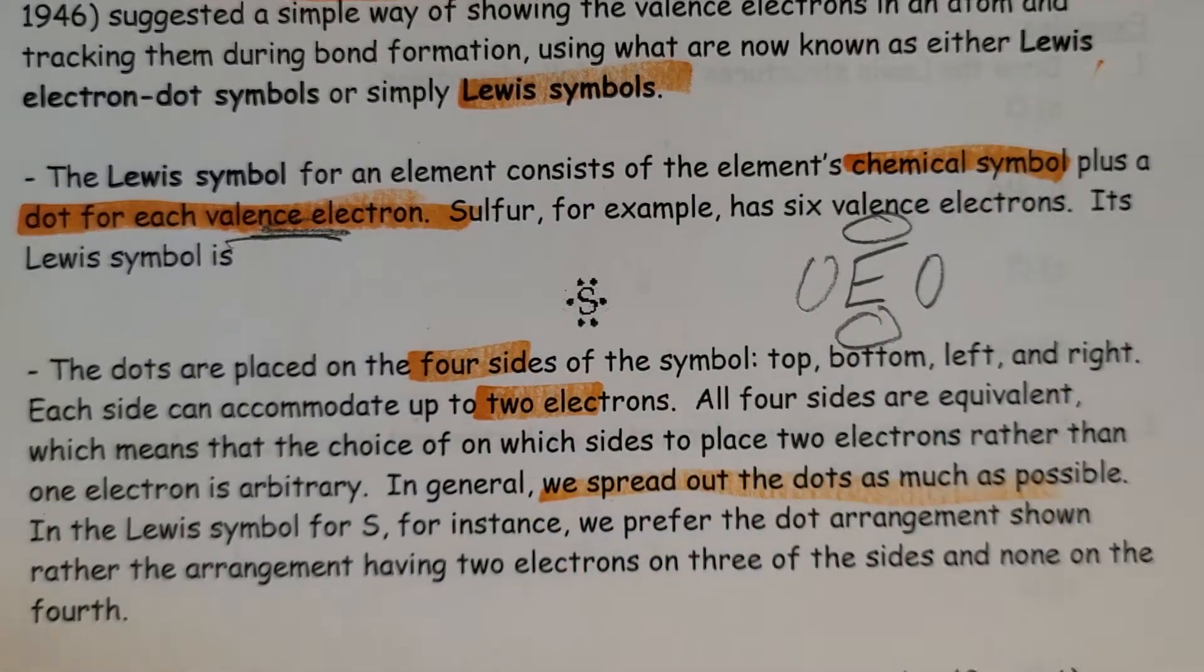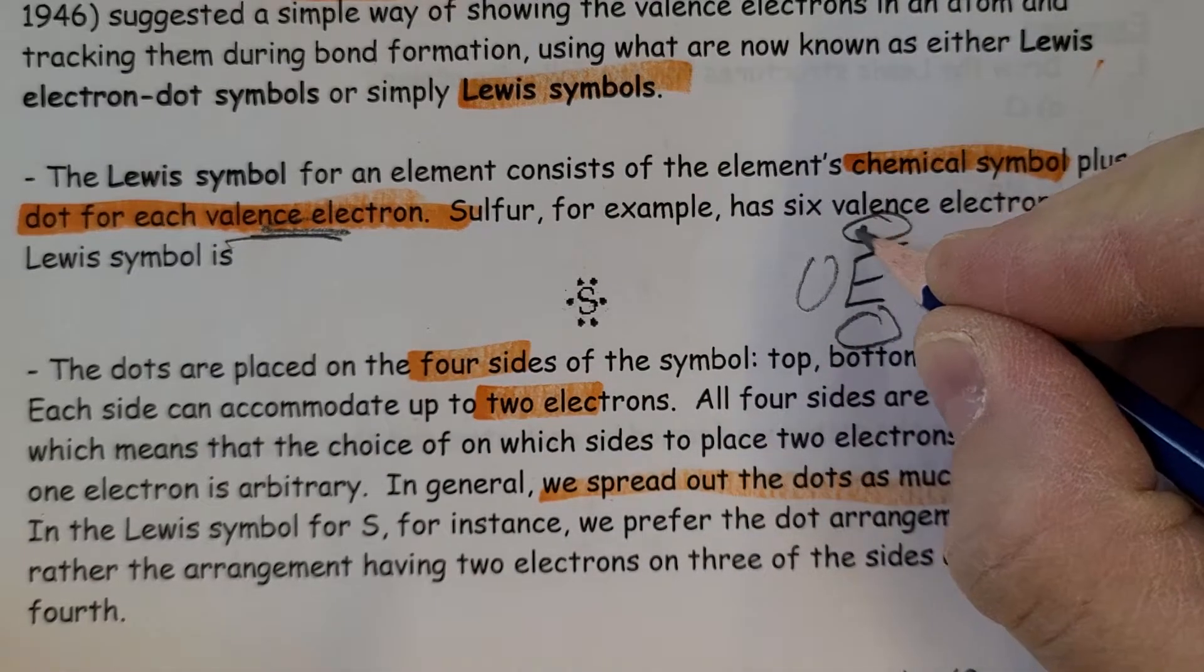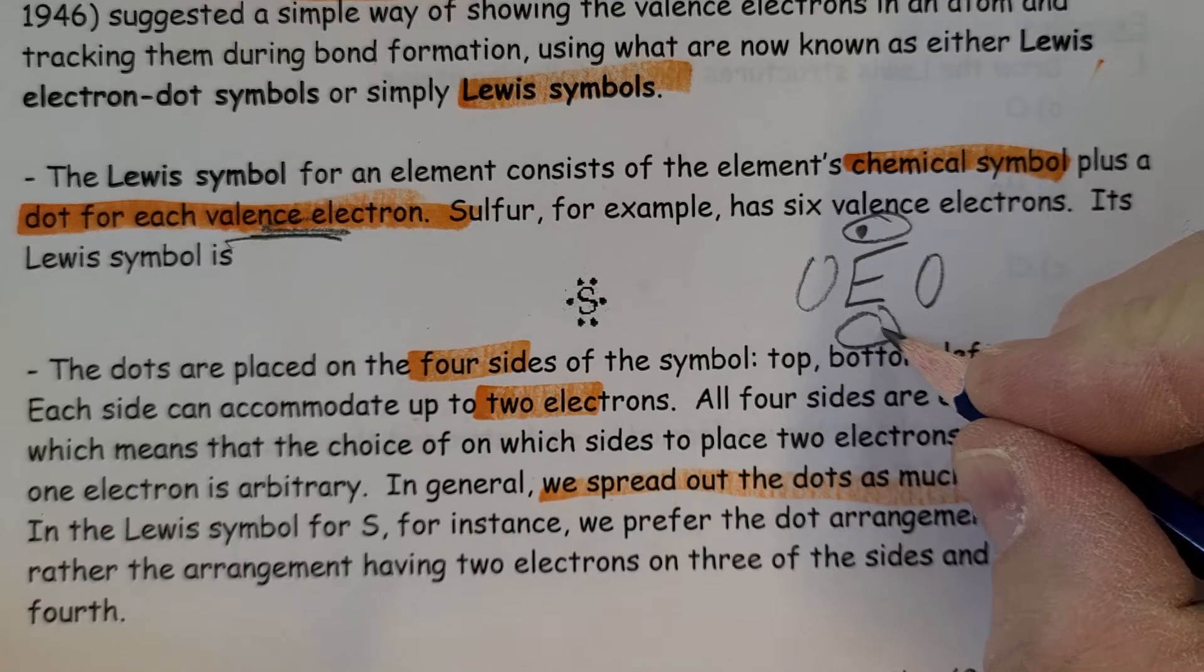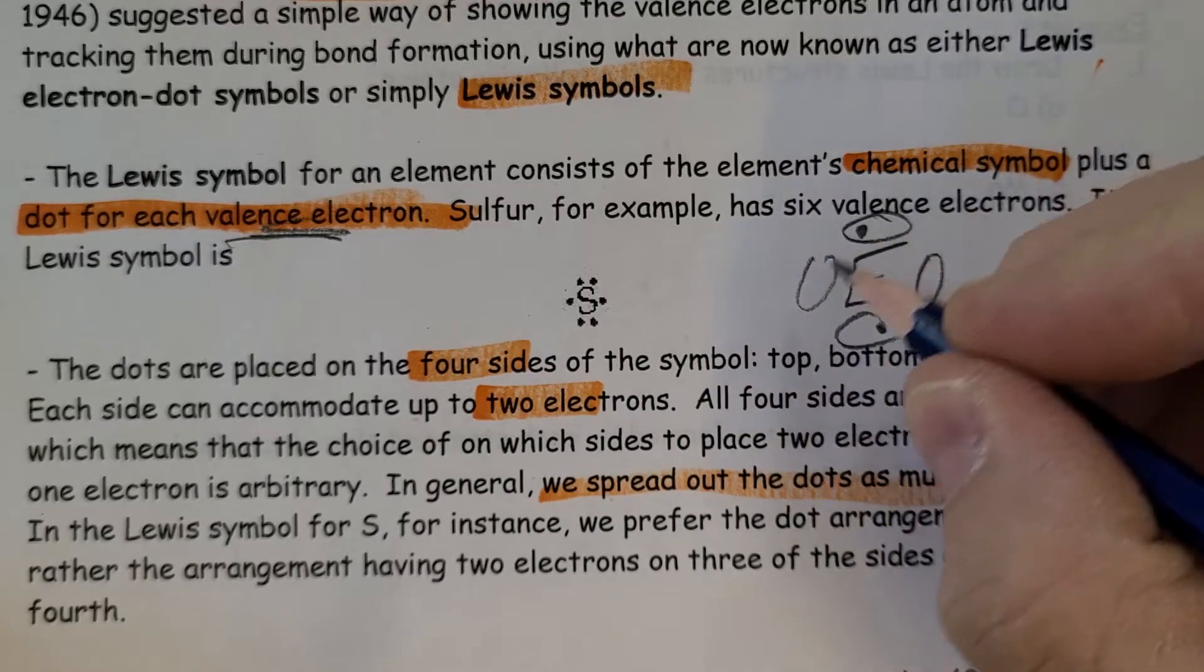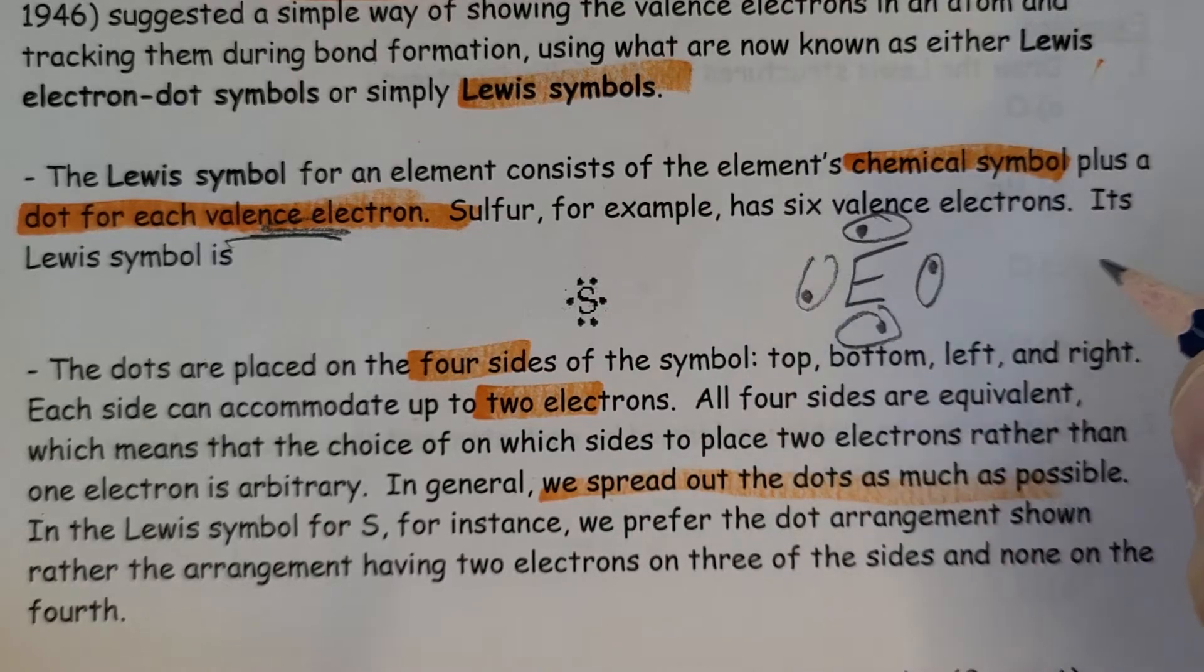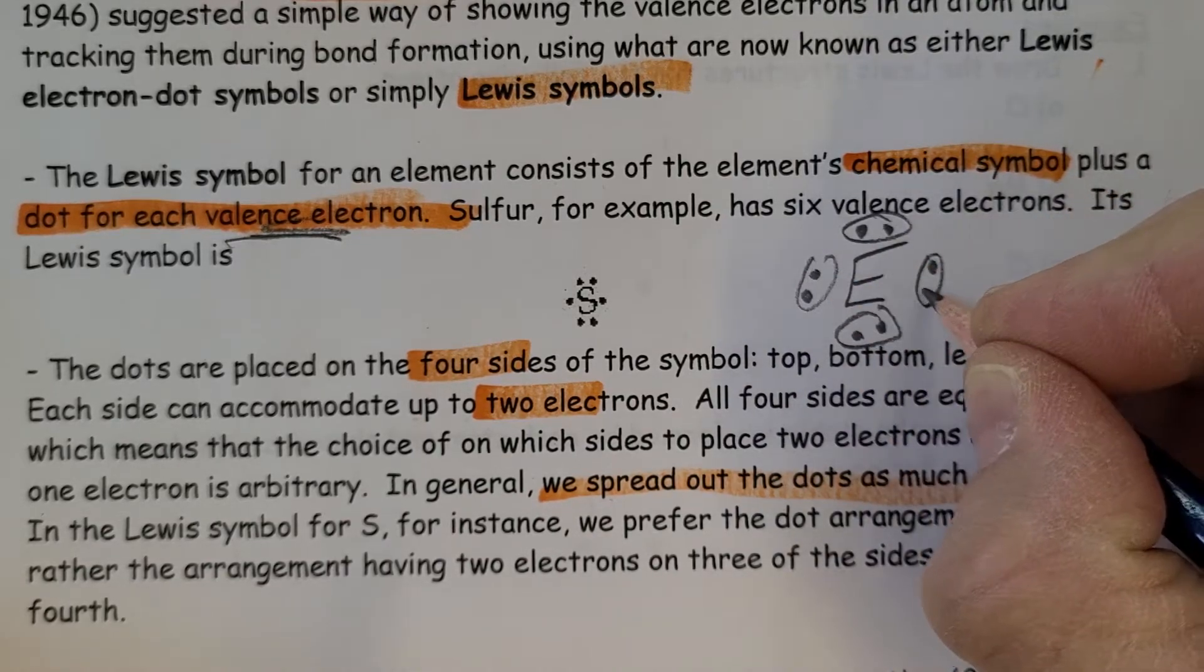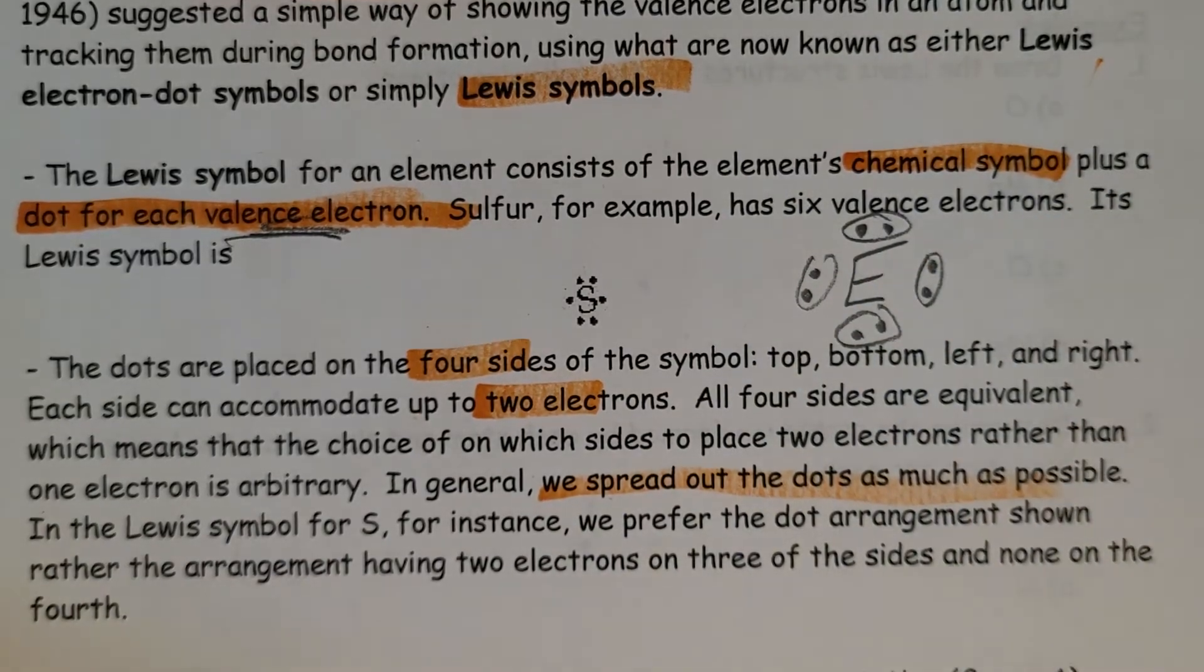Generally we spread out the dots as much as possible as we're filling it up. So let's say we had eight electrons to place. We can maybe start here, then spreading out as far as possible would be over here, as far as possible would be here and then here. So you would place four dots, there'd be one in each area, and then if there's more, you continue on in that fashion until we could potentially have a total of eight.